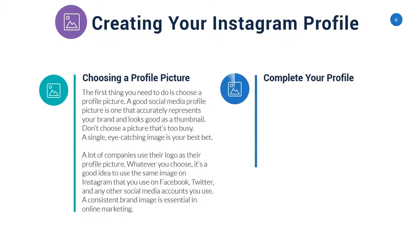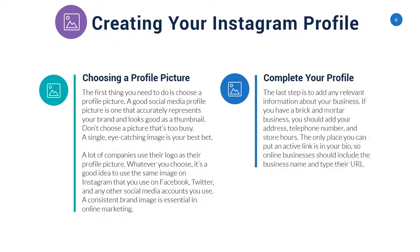Complete your profile. The last step is to add any relevant information about your business. If you have a brick-and-mortar business, you should add your address, telephone number, and store hours. The only place you can put an active link is in your bio, so online businesses should include the business name and type their URL.